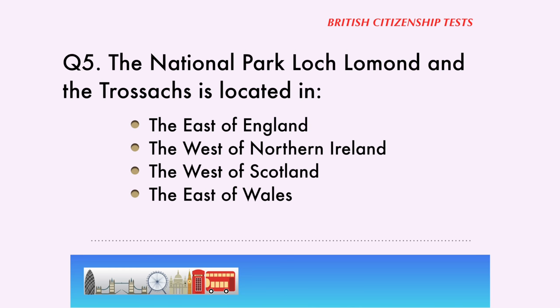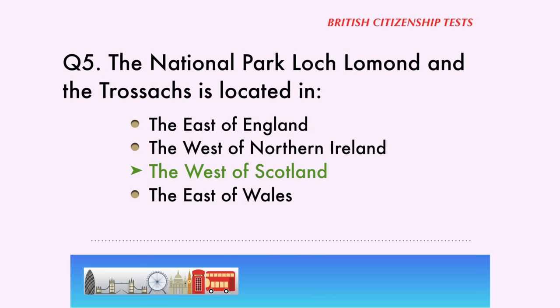Question 5. The National Park Loch Lomond and the Trossachs is located in: the East of England, the West of Northern Ireland, the West of Scotland, the East of Wales. The correct answer is: the West of Scotland.